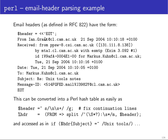What we do is read the entire email header into a single scalar variable $header, then apply a regular expression substitution to it. We look for any occurrence of a newline character followed by one or more space characters — that's one of these continuation lines — and replace the newline and the spaces with a single space. We do this everywhere in the string, for the entire header.